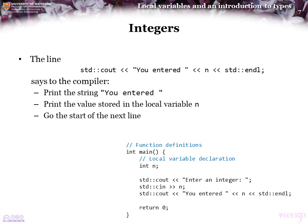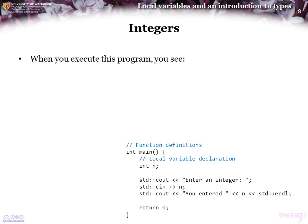The line 'std::cout << "You entered" << n' (standard console output) says to the compiler: print the string 'you entered', print the value stored in the local variable n, and then go to the start of the next line. Suppose you now compile this program and then execute it. The first thing to happen is that 'Enter an integer' is printed to the screen. This allows you, the user, to type in a number. Having done so, you press enter, and the text 'you entered' followed by whatever value you entered is printed to the screen. Then the function main returns and the program finishes execution.